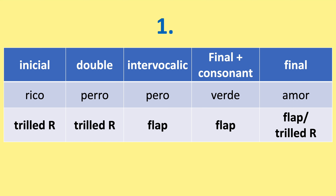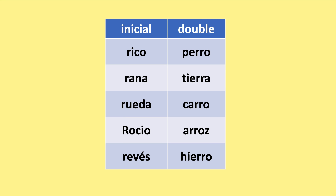Here are some more examples of the initial and double R: rico, rana, rueda, rocío, revés — and for the double R: perro, tierra, carro, arroz.